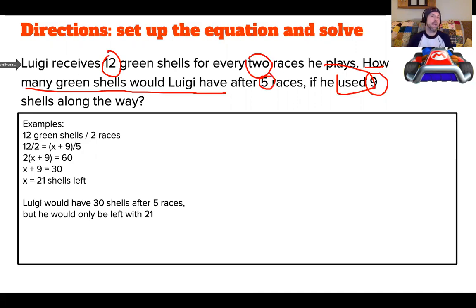I could have written out there, he started with this, he has 12 green shells for every two races, actually means that for every one race, he gets six shells. Six times five is 30. And if I subtract nine from that, I'm still left with 21. So I've got a couple of different ways of solving this equation.